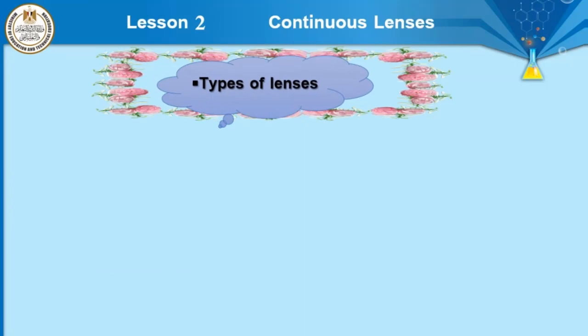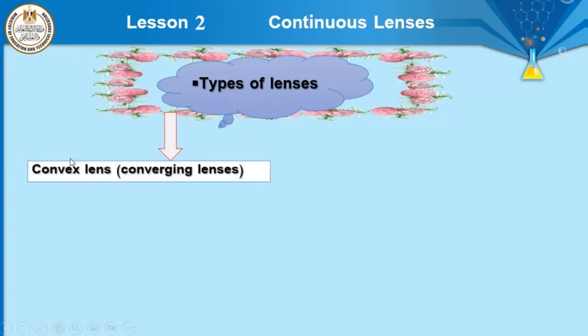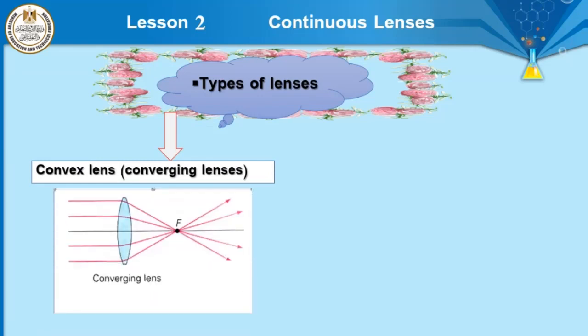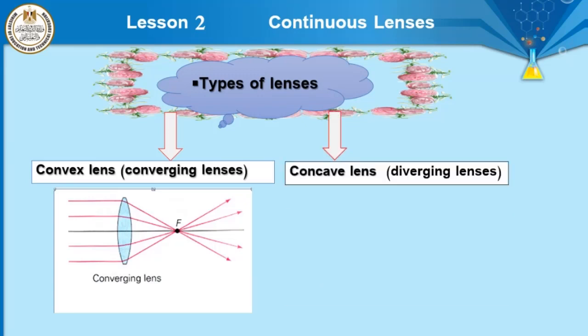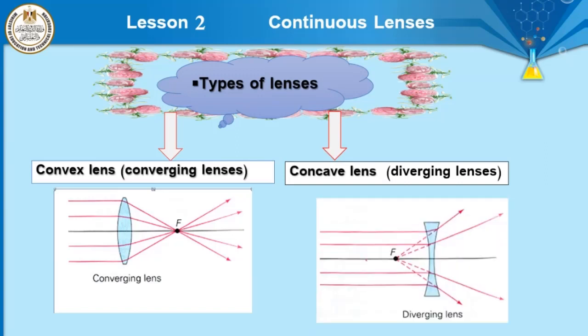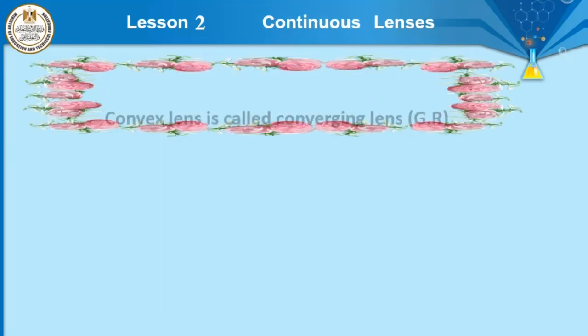In the previous session, we talked about types of lenses. Lenses can be classified into two types. Convex lens, which is called converging lens, as it collects light rays after refraction, as you see in the picture in front of you.